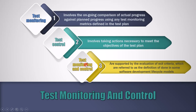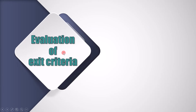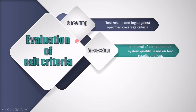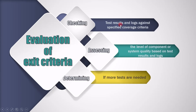The last point is test monitoring and control. In this definition, the word evaluation of exit criteria is important. Evaluation of exit criteria includes checking, assessing, and determining test activities. We have to check test results and logs against specified coverage criteria. We have to assess the level of component or system quality based on test results and logs. And we need to determine if more tests are needed to gain confidence. These are the points based on which we evaluate the exit criteria. Exit criteria will be covered in more detail in chapter 5, so for the time being just try to remember the provided information.